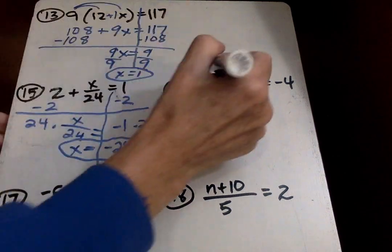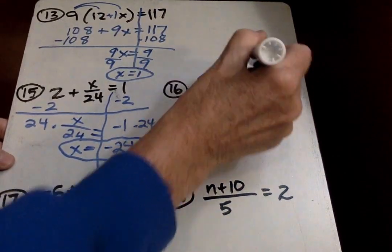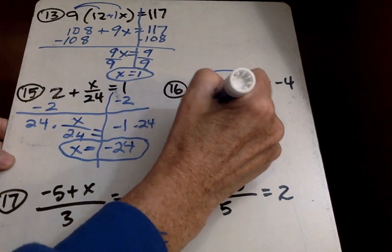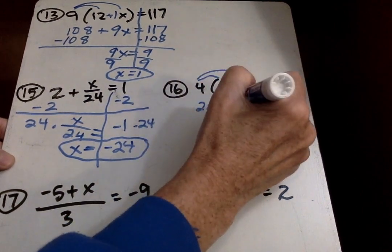Now I'm going to go on to 16. The first thing I want to do is the distributive property. 4 times 5 is 20. 4 times X is 4X.